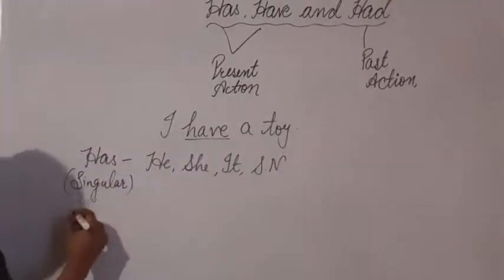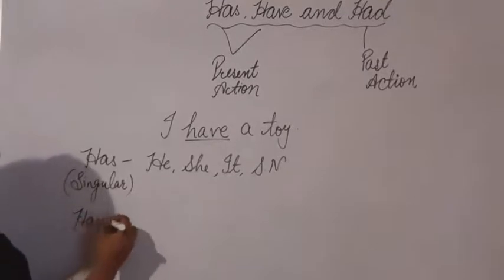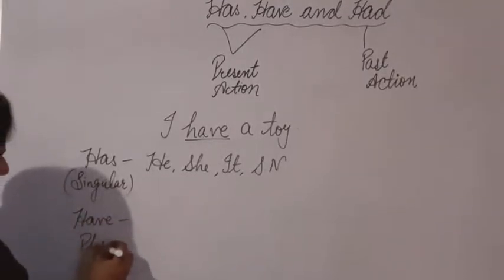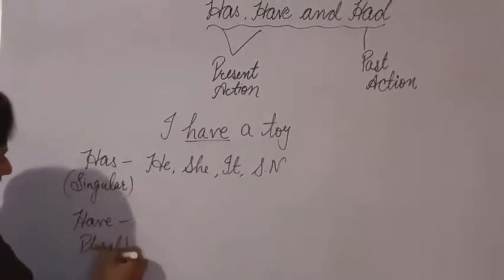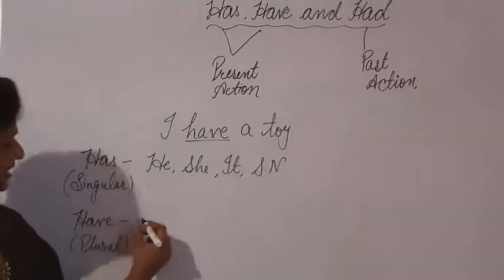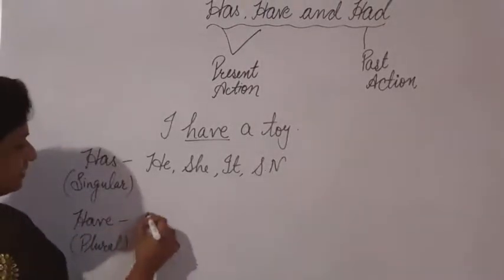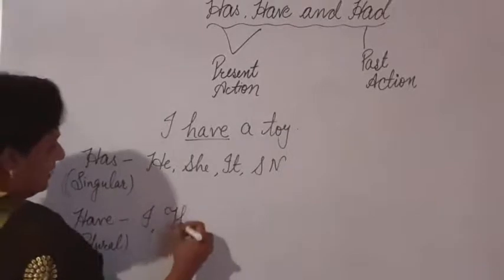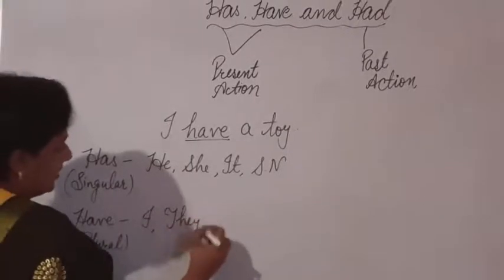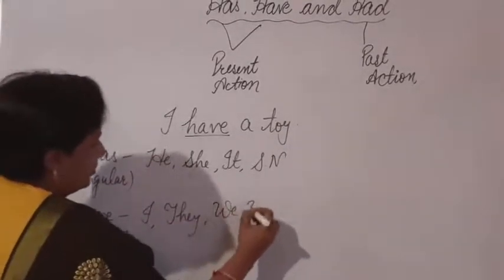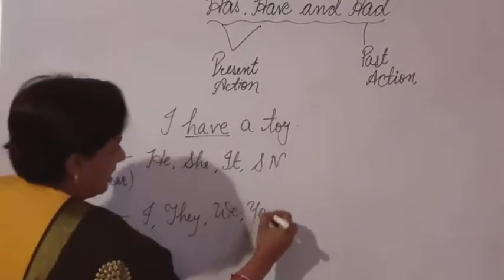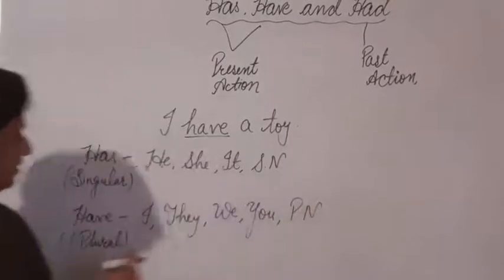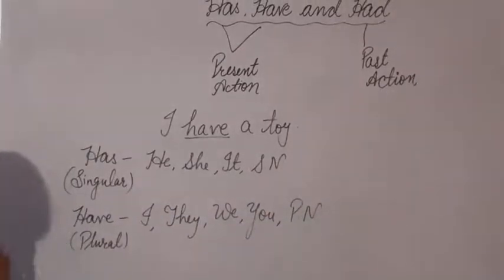And have is used for plural subjects. If the subject is I, they, we, or you, and related to a plural noun, we will use have.